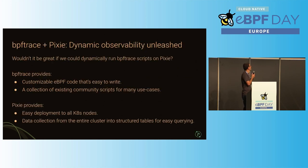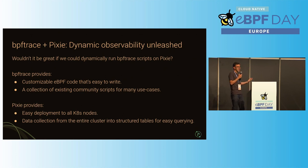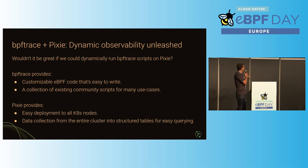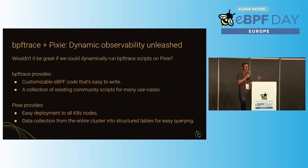Now let's put them together. We asked ourselves: wouldn't it be great if we could bring the power of BPF Trace and integrate it into Pixie to get the best of both worlds? BPF Trace provides the ability to write eBPF code really easily and get into the nitty-gritty of what's happening in your system, with a large collection of community scripts. On the other hand, Pixie provides easy deployment to Kubernetes, data collection from the entire cluster, structured tables for querying, visualizations — all that. So that's how we wanted to marry the two together.